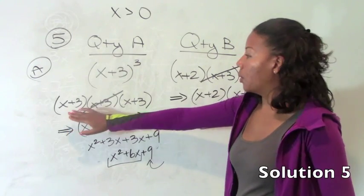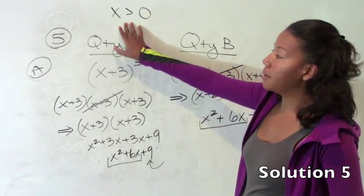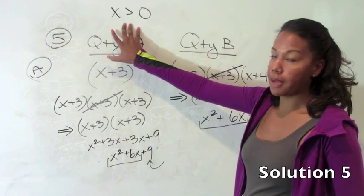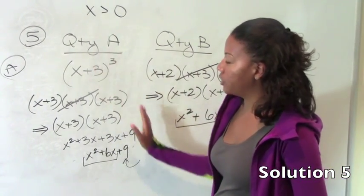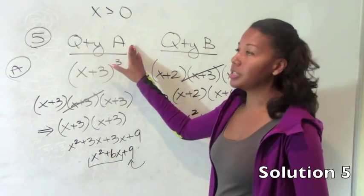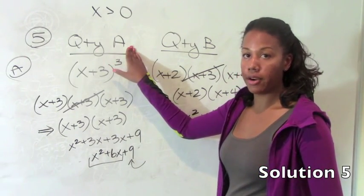You might make x 10 or 100. As long as you keep it positive then you're in good shape. If you see it enough times that this side is bigger then you can be confident that the answer is A that quantity A will always be bigger.